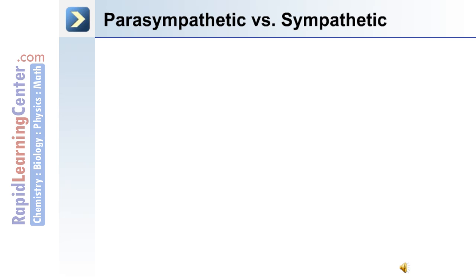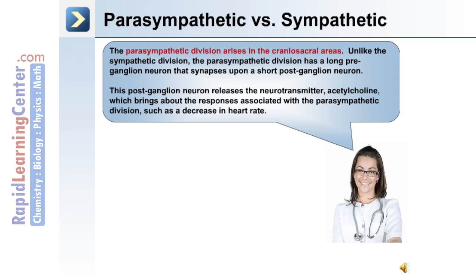The parasympathetic division arises in the craniosacral areas. Unlike the sympathetic division, the parasympathetic division has long pre-ganglionic neurons that synapse upon a short post-ganglionic neuron. This post-ganglionic neuron releases the neurotransmitter acetylcholine, which brings about responses associated with the parasympathetic division, such as a decrease in heart rate.